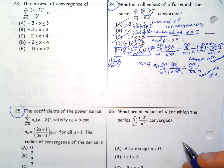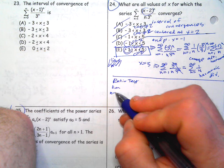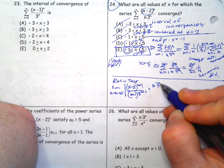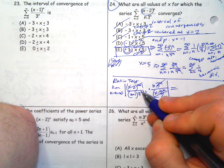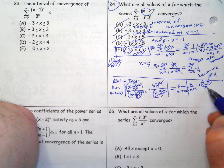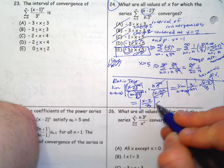For the full ratio test approach: the limit as n goes to infinity of the absolute value of (x minus 2) to the n+1 over (n+1) times 3 to the n+1, divided by the nth term, simplifies to the limit of n over (n+1) times (x minus 2)/3. That goes to the absolute value of (x minus 2)/3, which must be less than 1, giving absolute value of (x minus 2) less than 3. That's the radius of convergence, and then you solve the inequality and check endpoints.